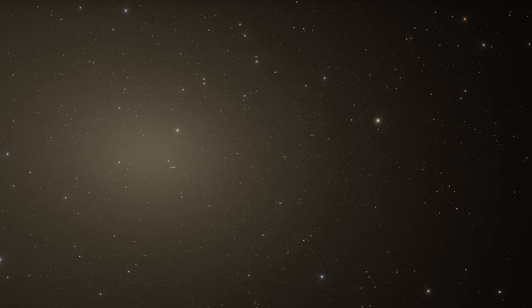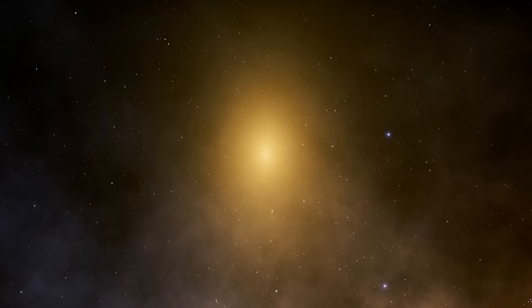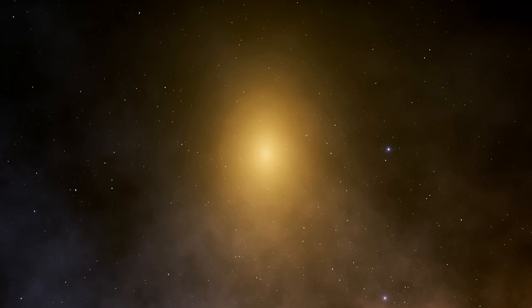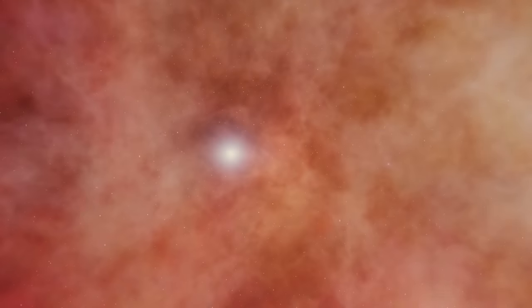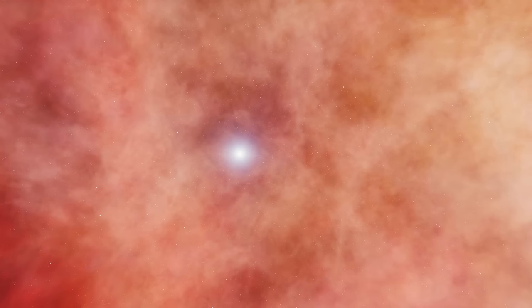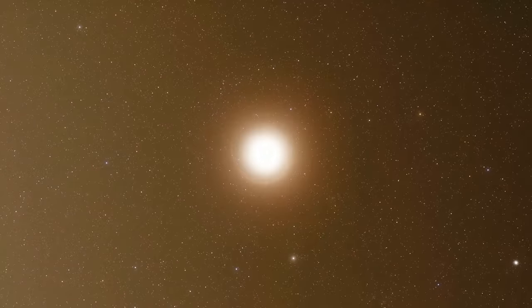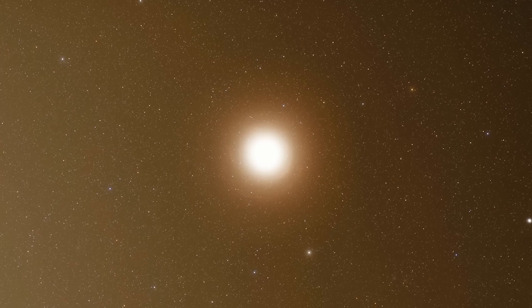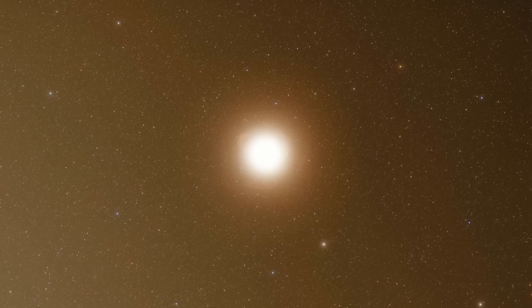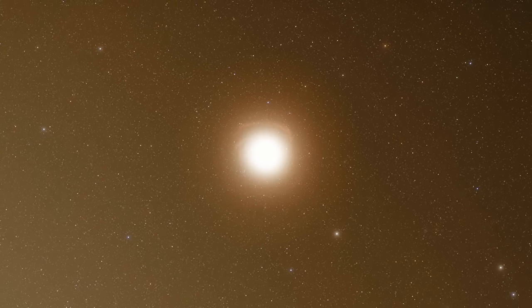While they do house large quantities of intracluster gas, this matter rarely cools to a temperature at which it can break out in prolific starbirth. Rather, BCGs tend to be hives of hot plasma, with an old stellar population flooded by ionising radiation, owing to ejections from an enormous, centralised black hole.